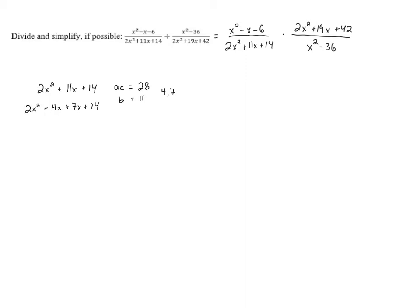And once we've split that up, we have four terms, so we can use grouping. The terms in the first group are both divisible by 2x, so we can pull out a 2x, and that leaves us with x plus 2 as the leftovers. In the second group, there's a GCF of 7, so we can pull that out, and that also leaves us with leftovers of x plus 2.